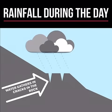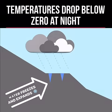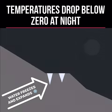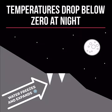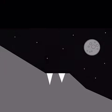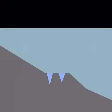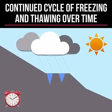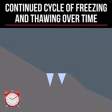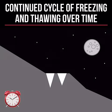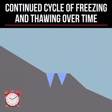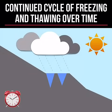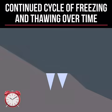During the day, water from rain may gather in cracks or joints in the rock. If the temperature drops below zero degrees Celsius at night, the water will freeze and expand. This may continue over many months and years, in a continued cycle of freezing and thawing, as frost and ice widen the cracks and weaken the rock.